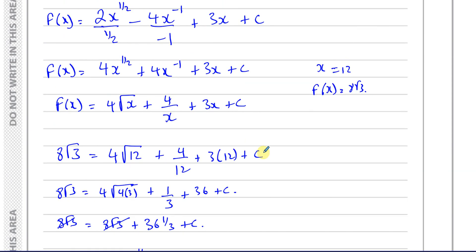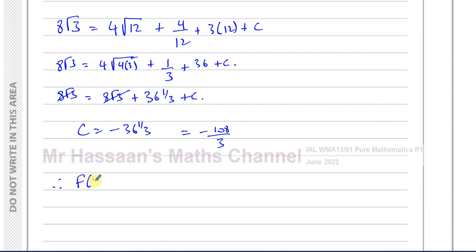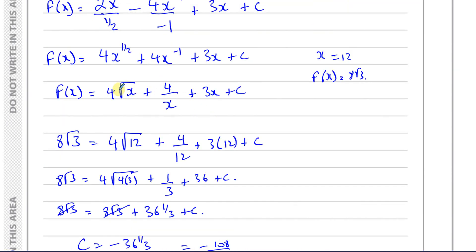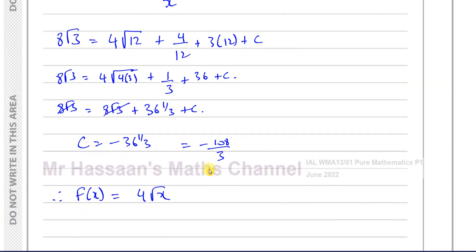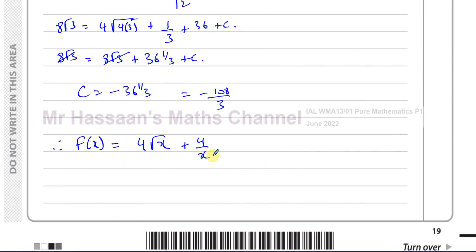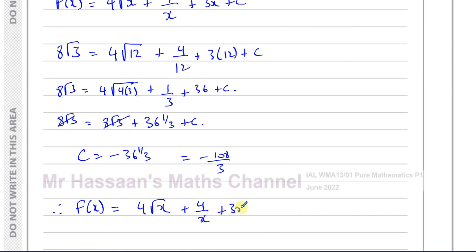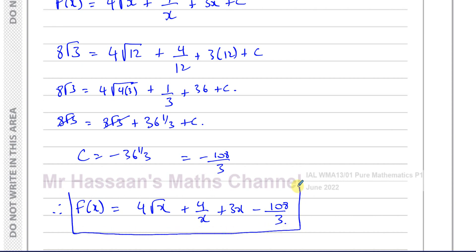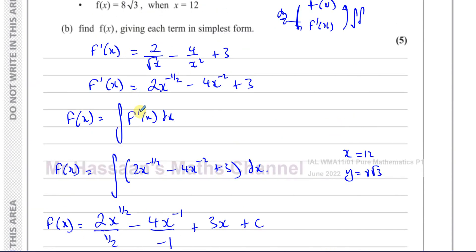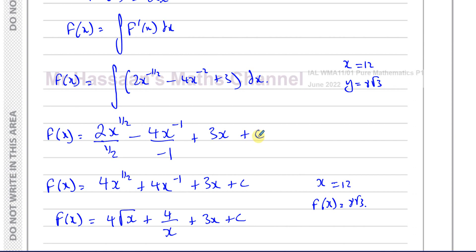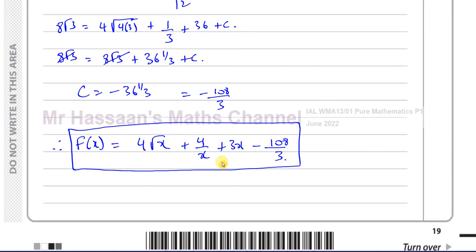Therefore we can now write down F(x). We have F(x) equals 4 root X plus 4 over X plus 3X minus 109/3 (or minus 36 and 1/3). We integrated F'(x) to find F(x), then substituted the given values X equals 12 and F(x) equals 8 root 3 to find the constant C.